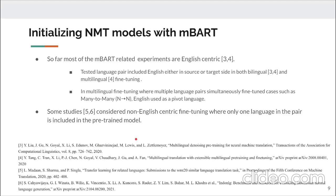Initializing an NMT model with MBART: so far, most MBART-related experiments are English-centric. The tested language pairs include English either in the source or target side in bilingual and multilingual fine-tuning. Bilingual fine-tuning means only one translation direction pair is fine-tuned at a time. Multilingual fine-tuning means multiple language pairs are jointly fine-tuned simultaneously, and even in that case, English is used as a pivot language.